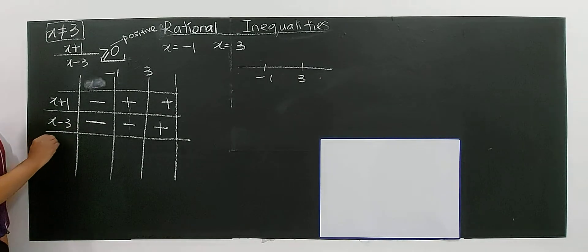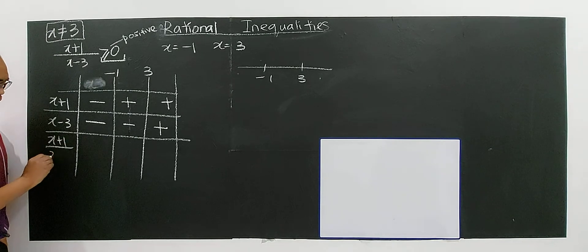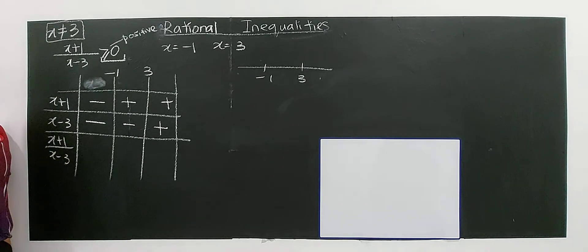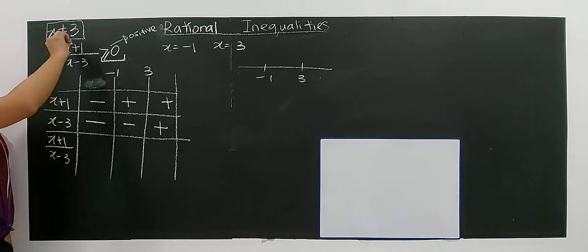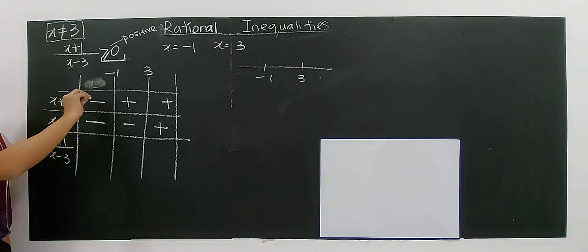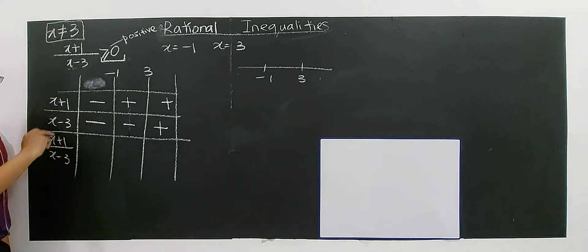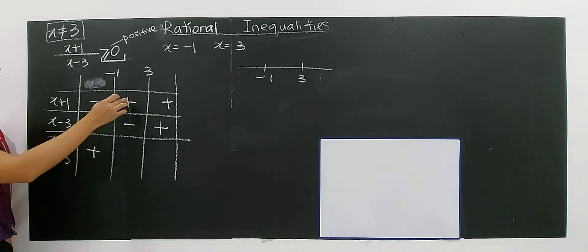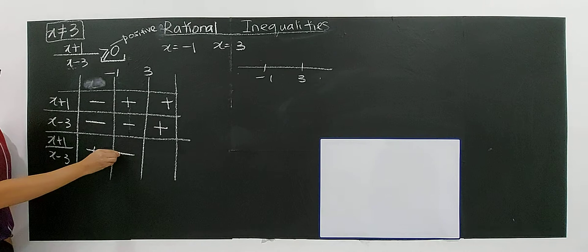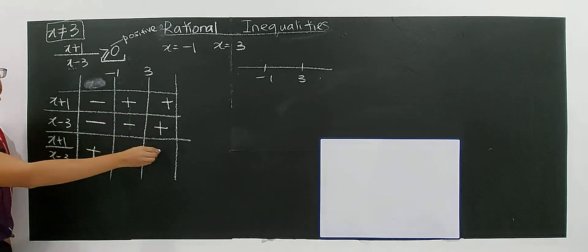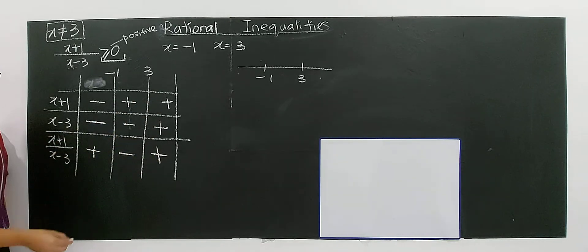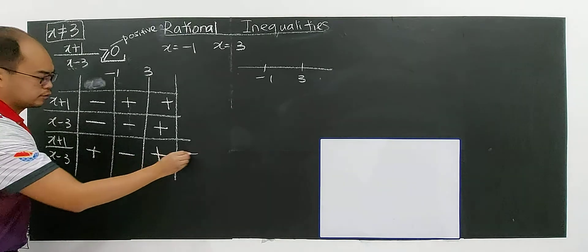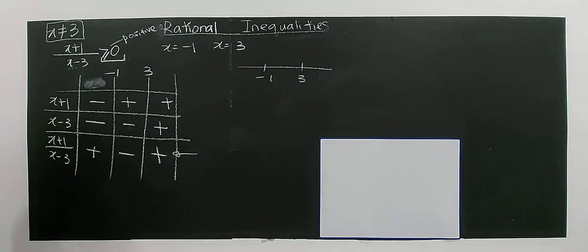Then finally you have x plus one divided by x minus three. Now you decide because you take division. If you're negative divided by negative you will have positive. Positive divided by negative you have negative, and positive divided by positive you have positive. Now this is the region where you need to decide which to choose.